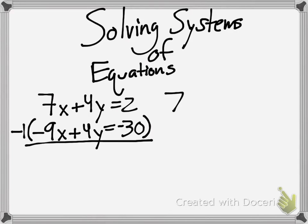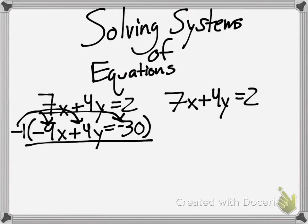So, I'm going to rewrite this. 7x plus 4y equals 2. And now I'm going to multiply my negative 1 by everything inside of the parentheses. And it gives me 9x minus 4y equals 30.